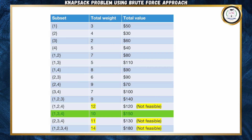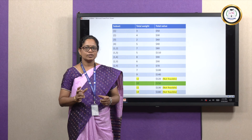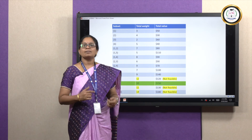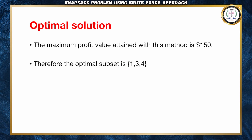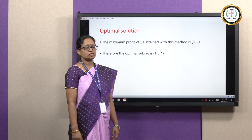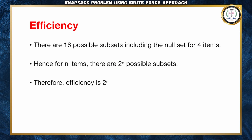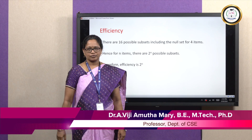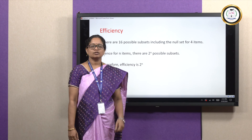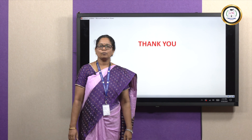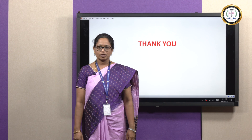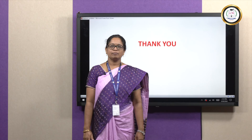We conclude that if you pack the knapsack with the subset of items {1, 3, 4}, you will get the maximum profit value which is $150. The maximum profit value attained with this knapsack method is $150 and the optimal subset is {1, 3, 4}. Depending upon the number of items, the number of subsets also will vary. In this example, we had 4 items, so the total number of subsets are 16 which is 2 power 4. If there are n items, there will be 2 power n possible subsets, hence the efficiency can be written as 2 power n. Hope you enjoyed learning the knapsack problem using brute force approach. Thank you for listening to this video lecture patiently. Meet you again in the next video lecture.